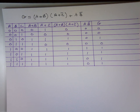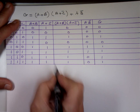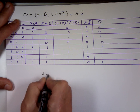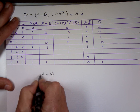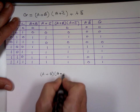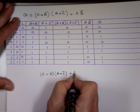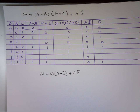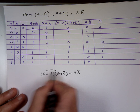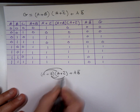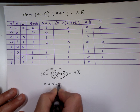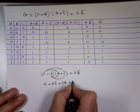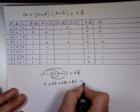Now watch this. If you did the Boolean algebra on that, as I said earlier, you could have made life a little easier. Instead of doing all those columns, you can go straight to the answer. If you distribute using the FOIL method, you get: A·A plus A·C bar plus A·B plus B·C bar, plus AB bar.